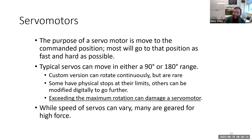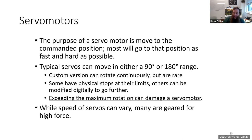A typical servo motor moves within a 90 or 180-degree range — you cannot do continuous rotation. Some custom versions can, but they are rare. Some have digital stops in their control circuits; others have physical limiters that can crack the servo if you push past them. Speed varies, but most are geared for high force. They probably won't work for a mantis shrimp robot, but for a reaching arm or snake robot, servos work great.